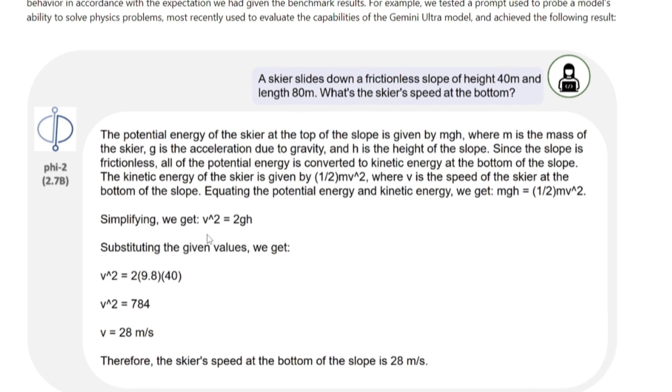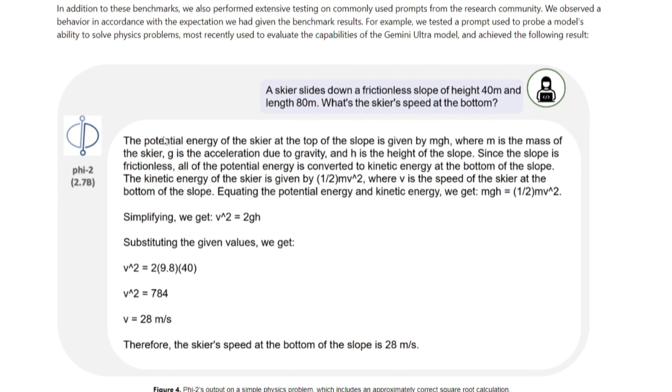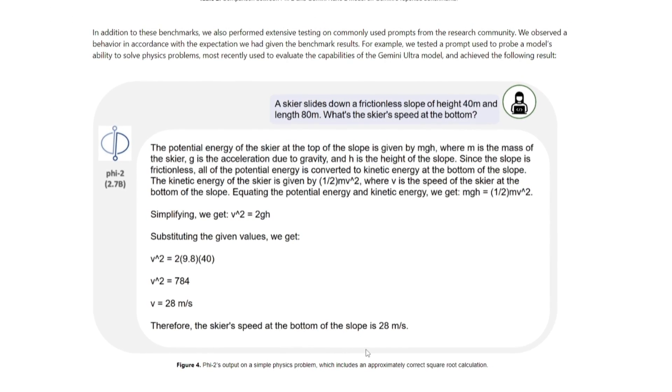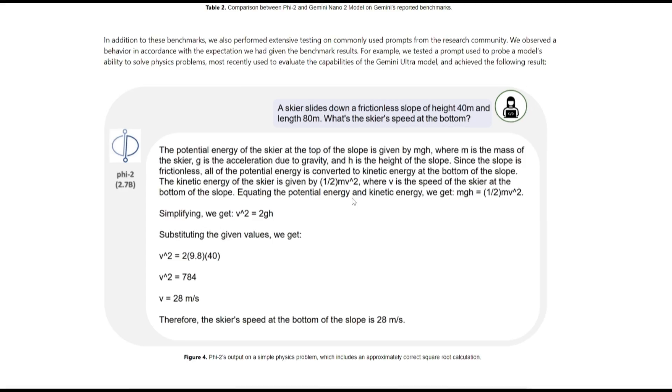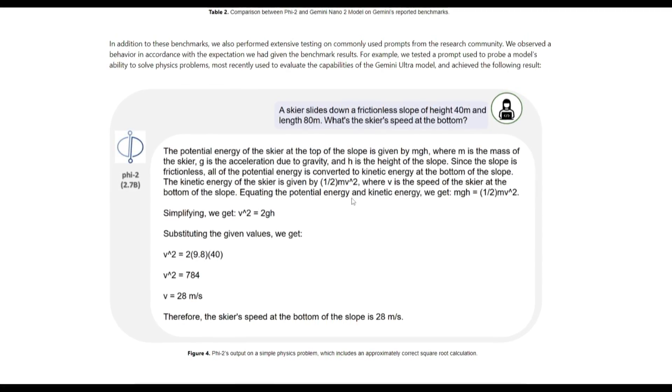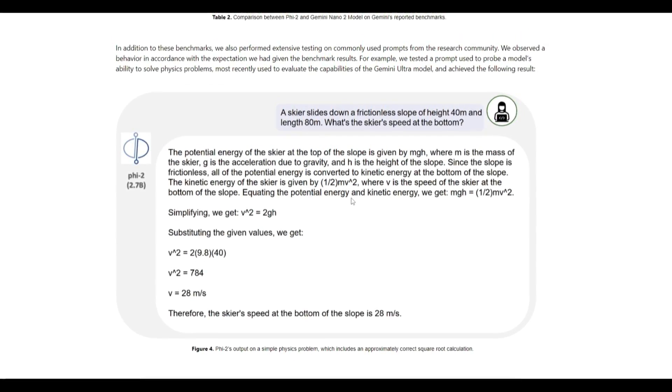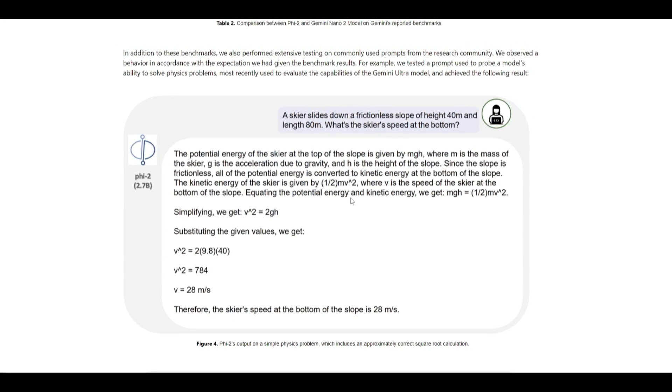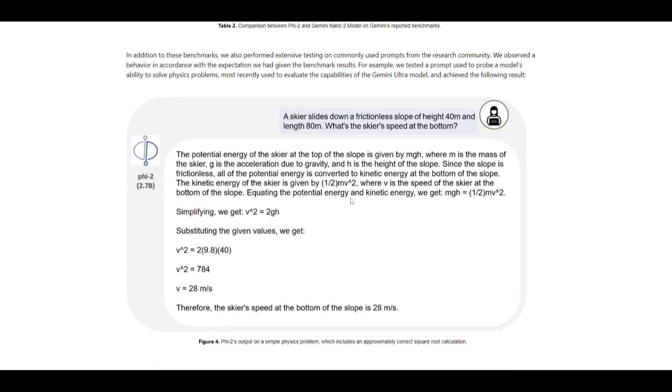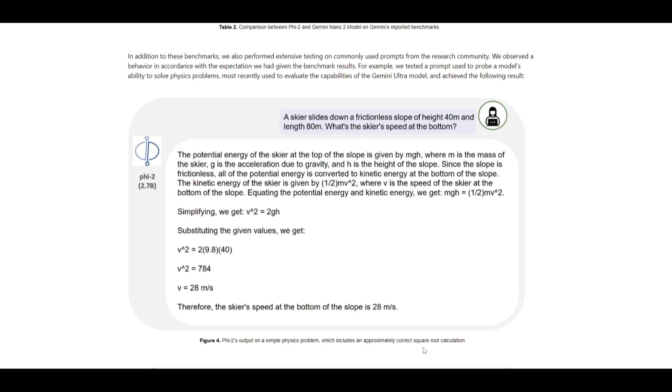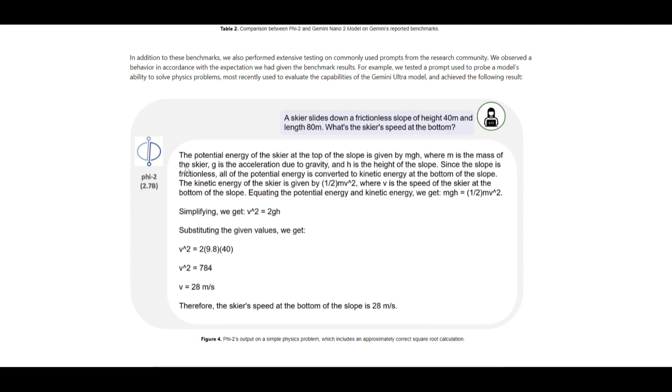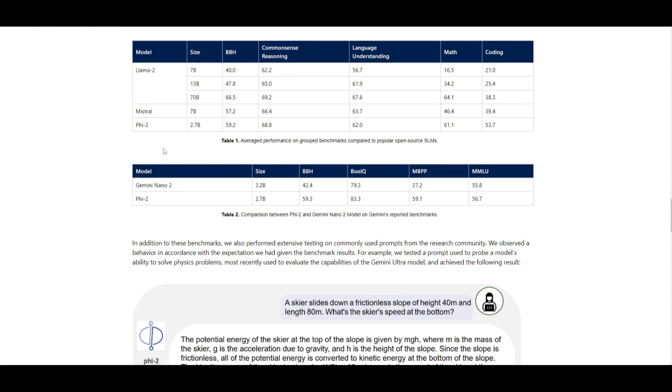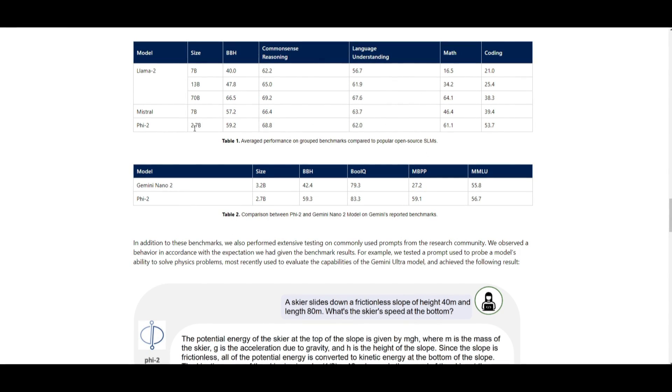Let's take a look at this example where Phi-2 outputs a generation on a simple physics problem involving multiple steps within mathematics. This is not appropriate for a smaller model to generate, as smaller models do not have the dataset to generate such problems, but we can see it's able to approximately give the correct square root calculation and the right steps to do so. This is quite impressive for such a model with a very small parameter size of 2.7 billion.